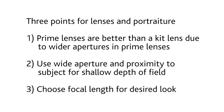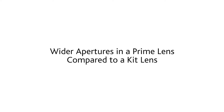The second point is use a wide aperture and get fairly close to your subject. That will give you a shallow depth of field which will blur the background and give separation between the person you're taking a picture of and a confusing background. The third point is choose the focal length that's going to give you the desired look.